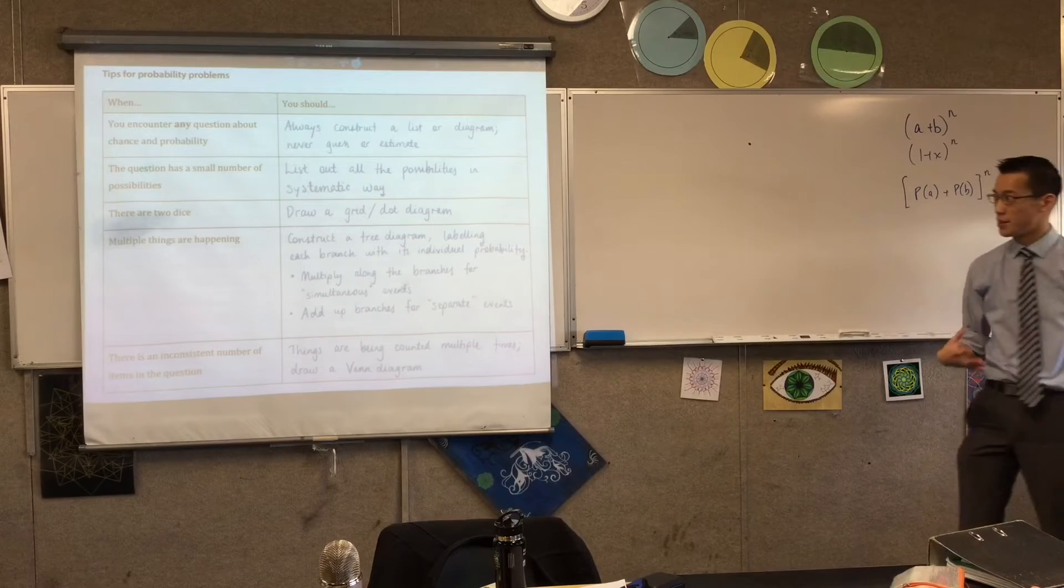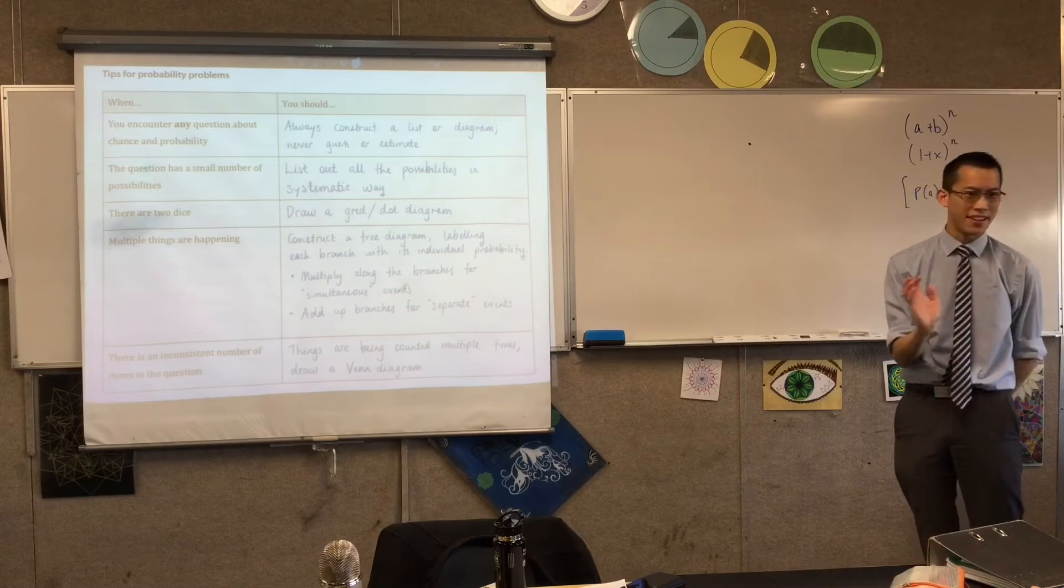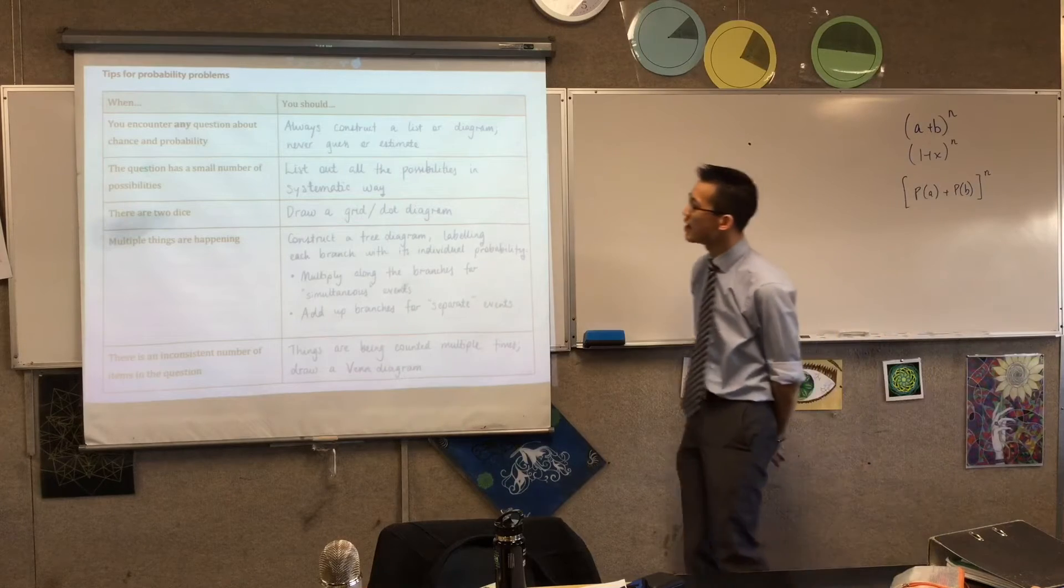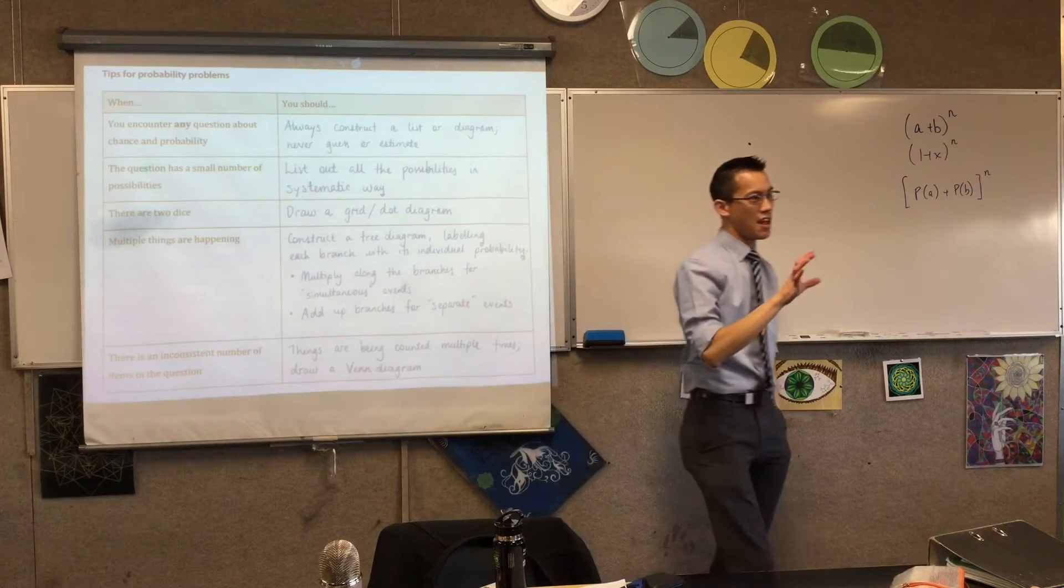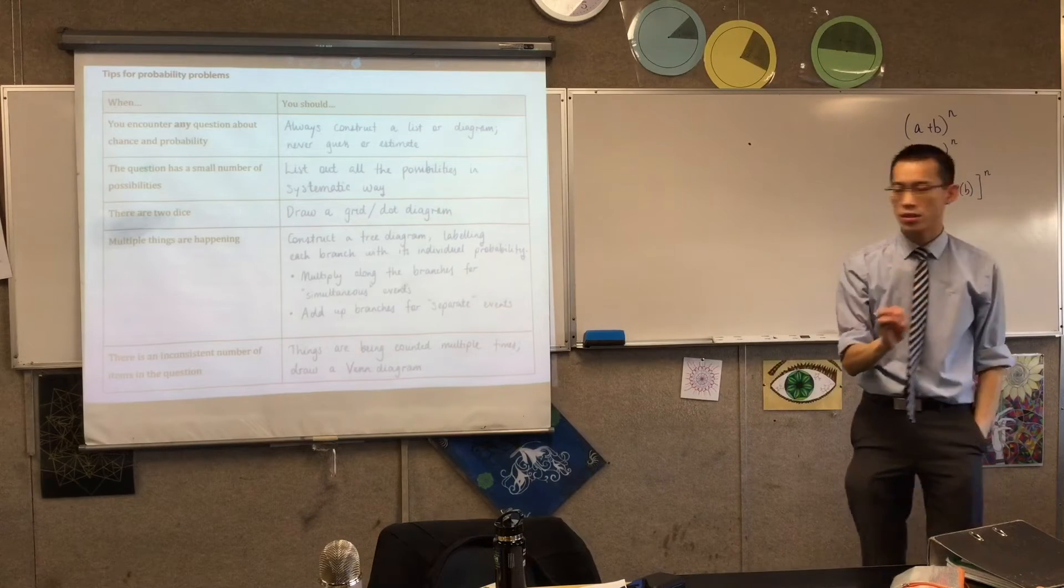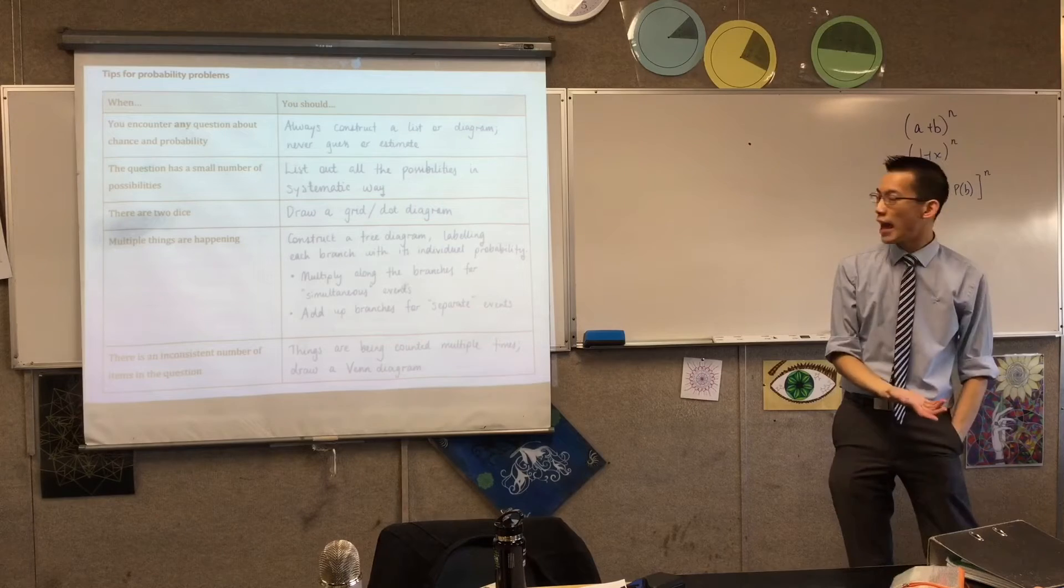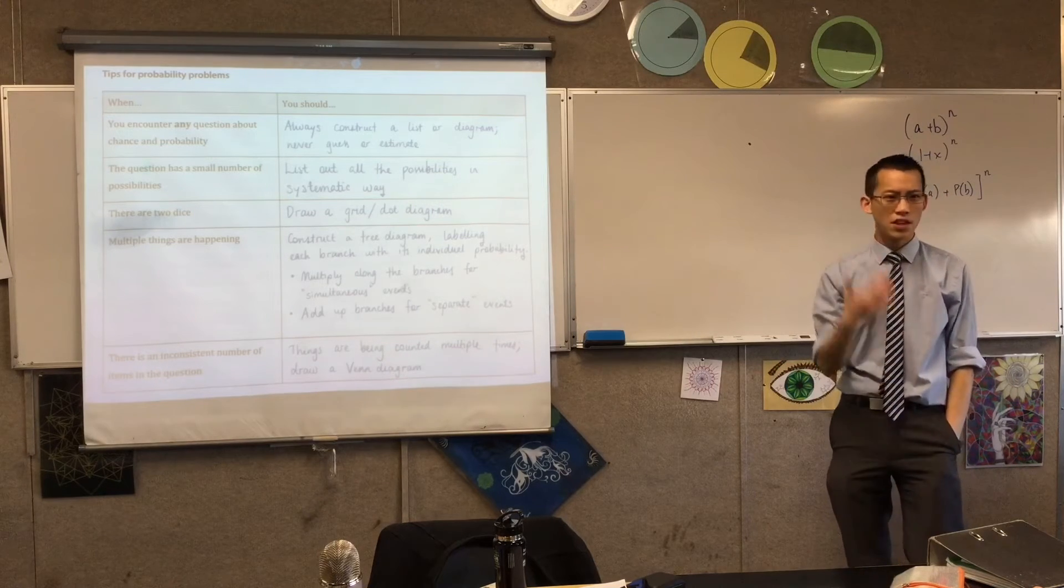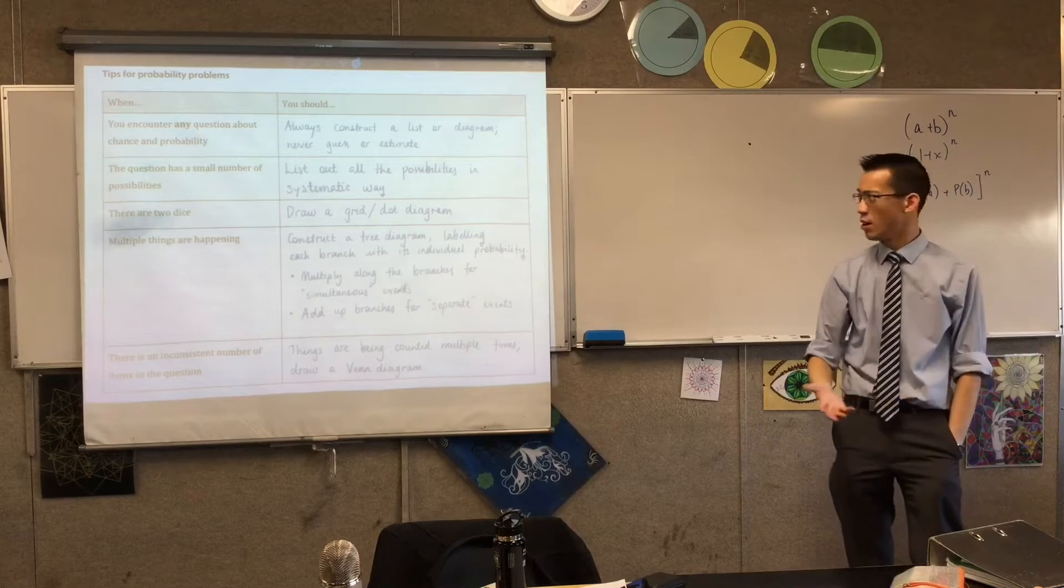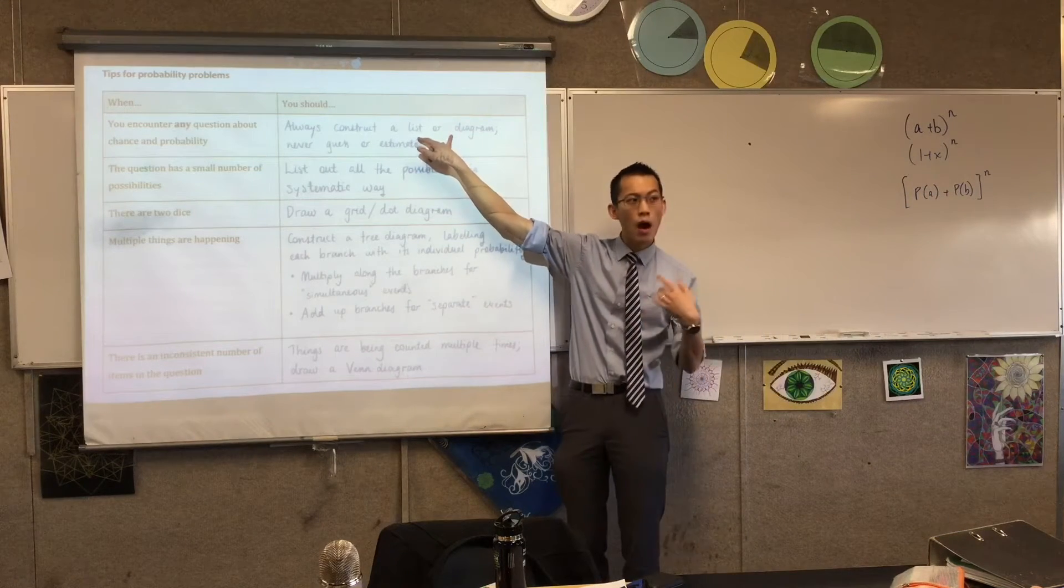So, for starters, anywhere in chance of probability, please construct something, anything, that will justify your answer. Very frequently, your answer is just a fraction, and sometimes you'll just write it down, and that'll be it. But there will be two marks on the question. Why? The answer is, they're looking for what you used to arrive at that fraction.